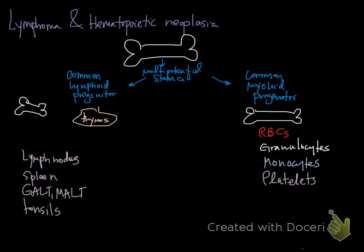This video will cover lymphoma and a general overview of hematopoietic neoplasia, so you can see how lymphoma differs from hematopoietic neoplasia. Similar to the other video, I'll go through hematopoiesis briefly. It starts with that multi-potential stem cell, which can eventually become either a common lymphoid progenitor in the marrow or a common myeloid progenitor.